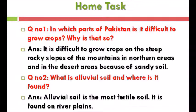Today your home task is questions number 1, 2, 3, and 4. Question 1: In which parts of Pakistan is it difficult to grow crops, and why? Answer: It is difficult to grow crops on the steep, rocky slopes of the mountains in the northern areas and in the desert areas because of sandy soil. Question 2: What is alluvial soil and where is it found? Answer: Alluvial soil is the most fertile soil; it is found on the river plains.